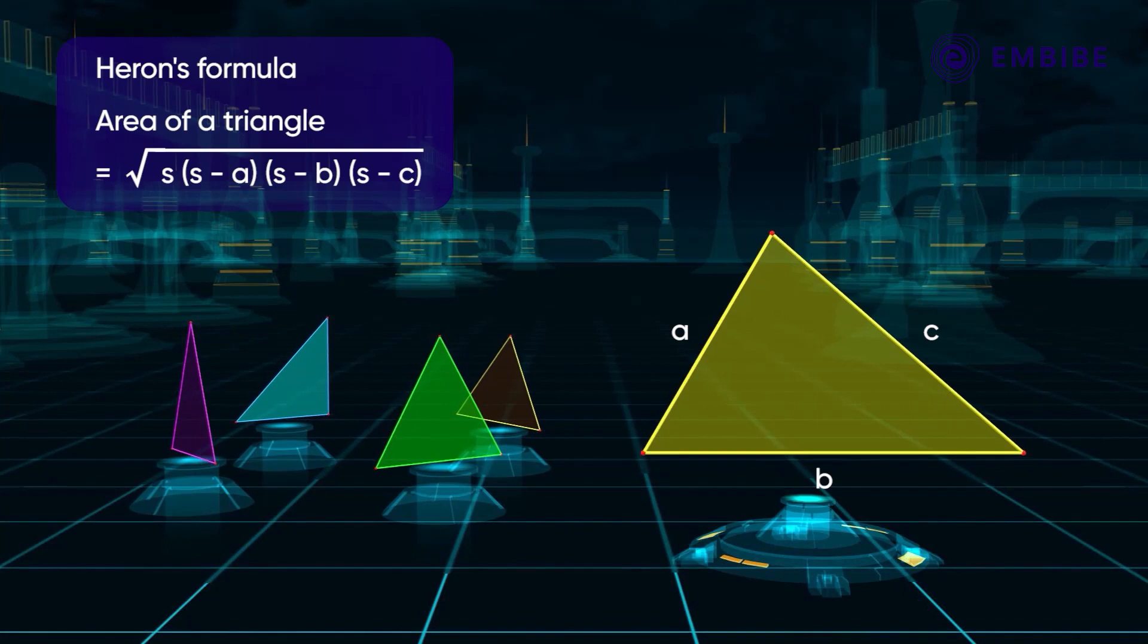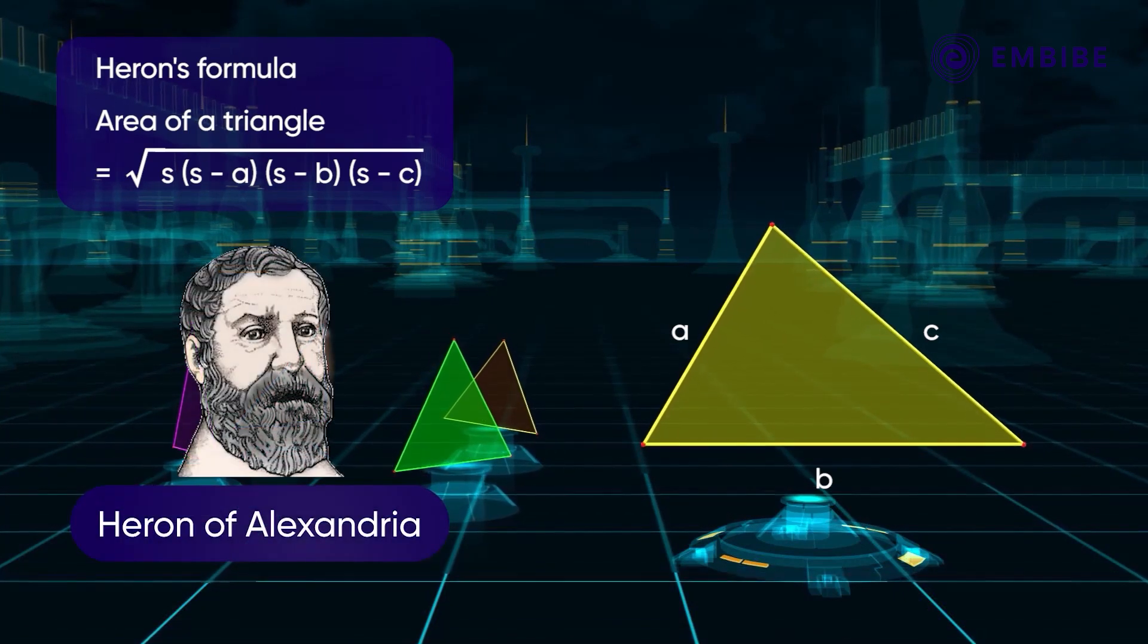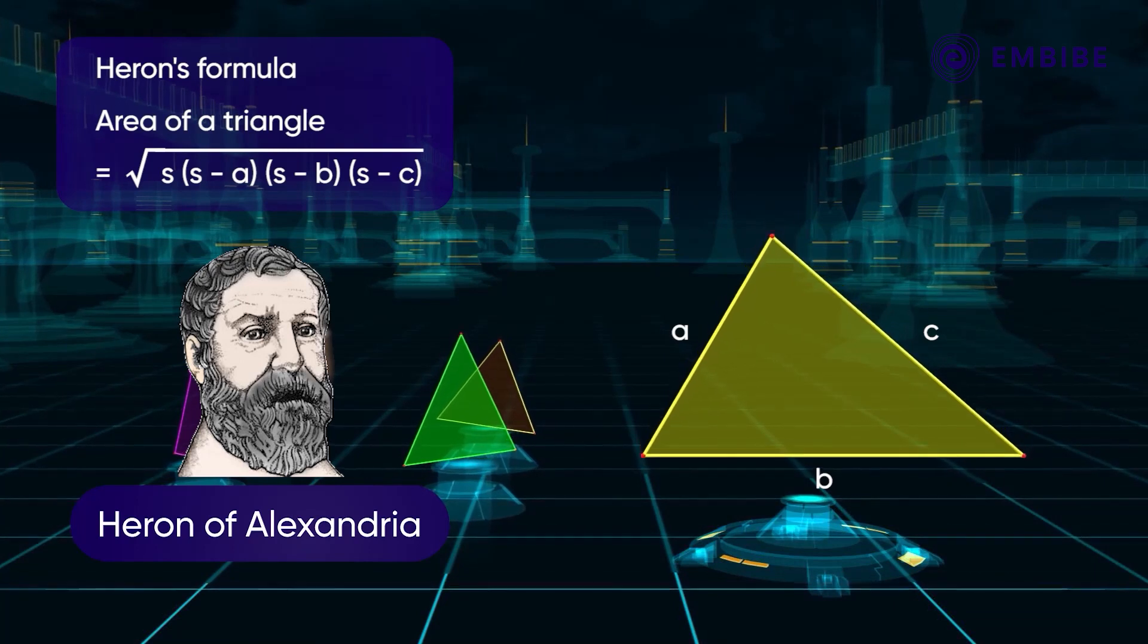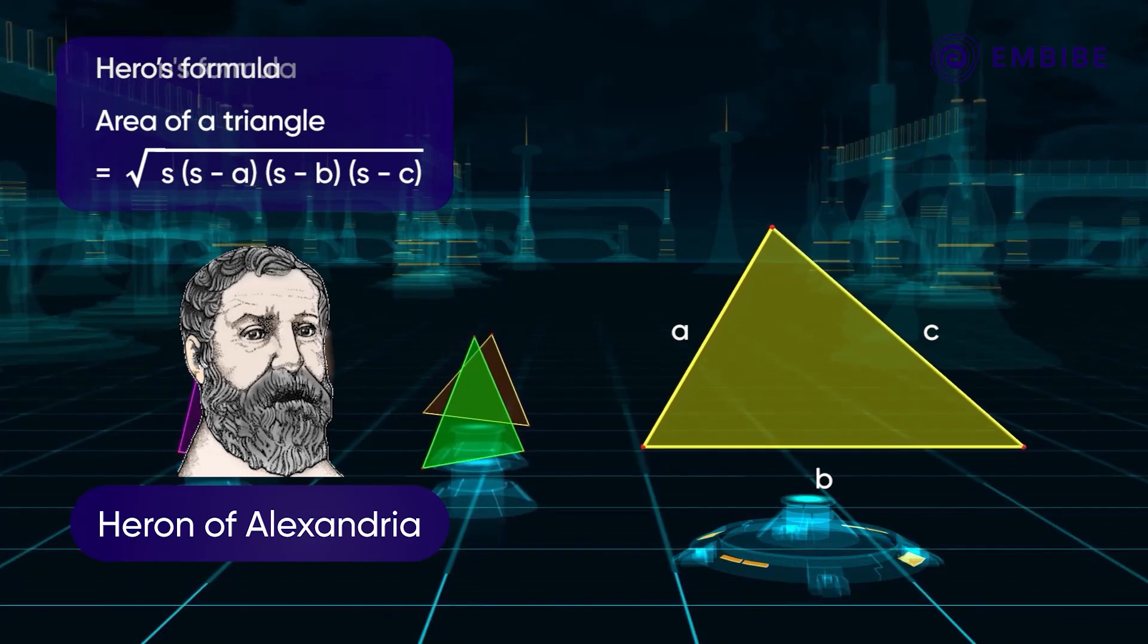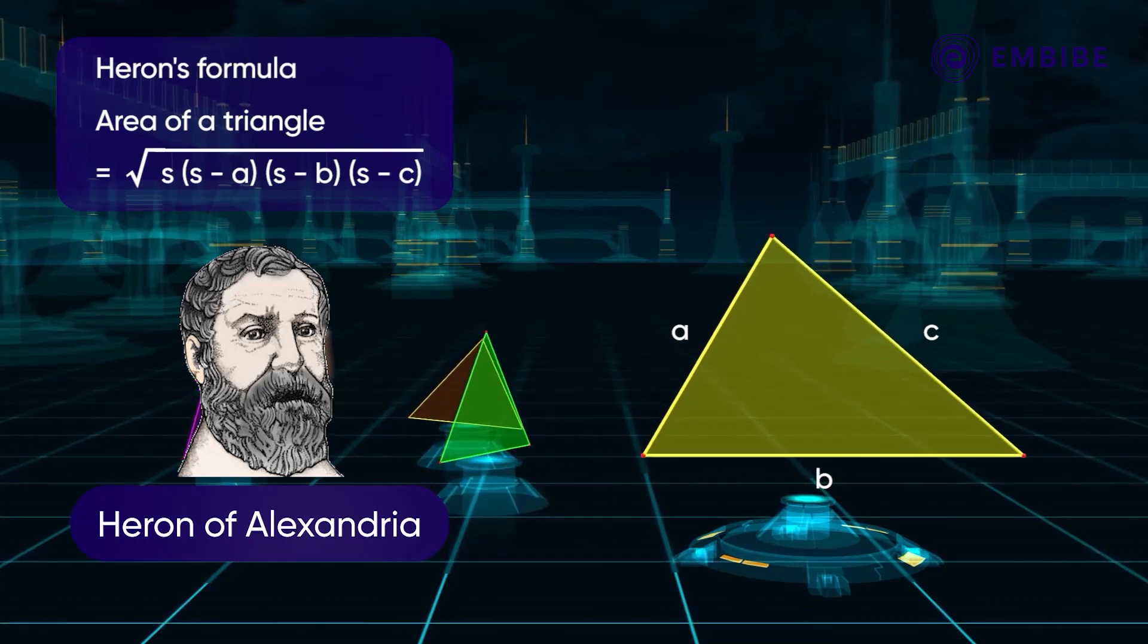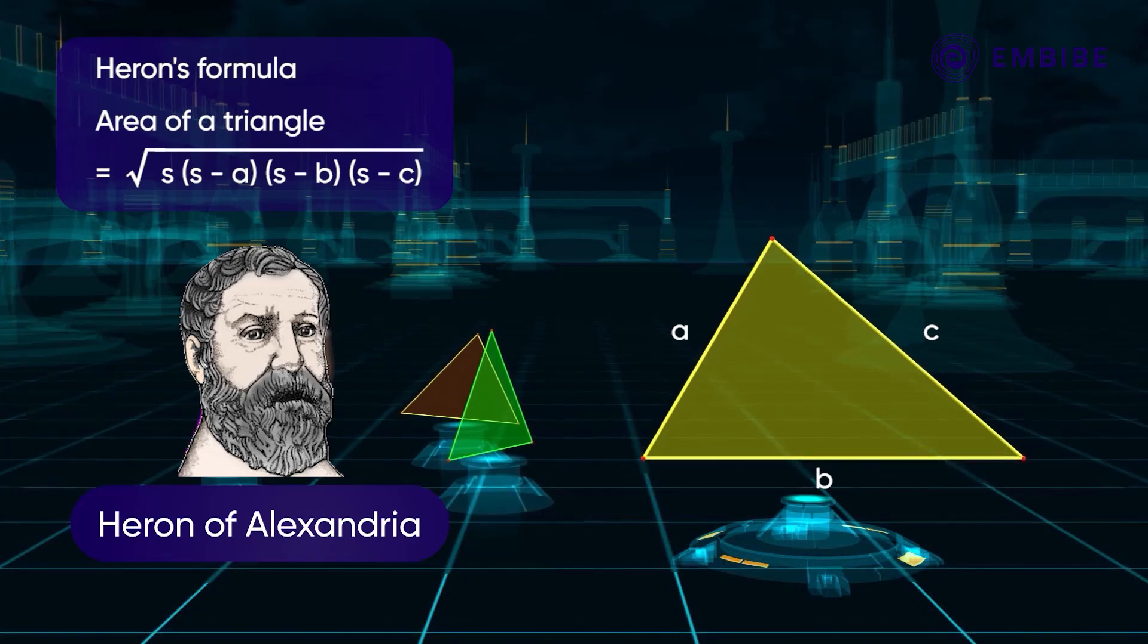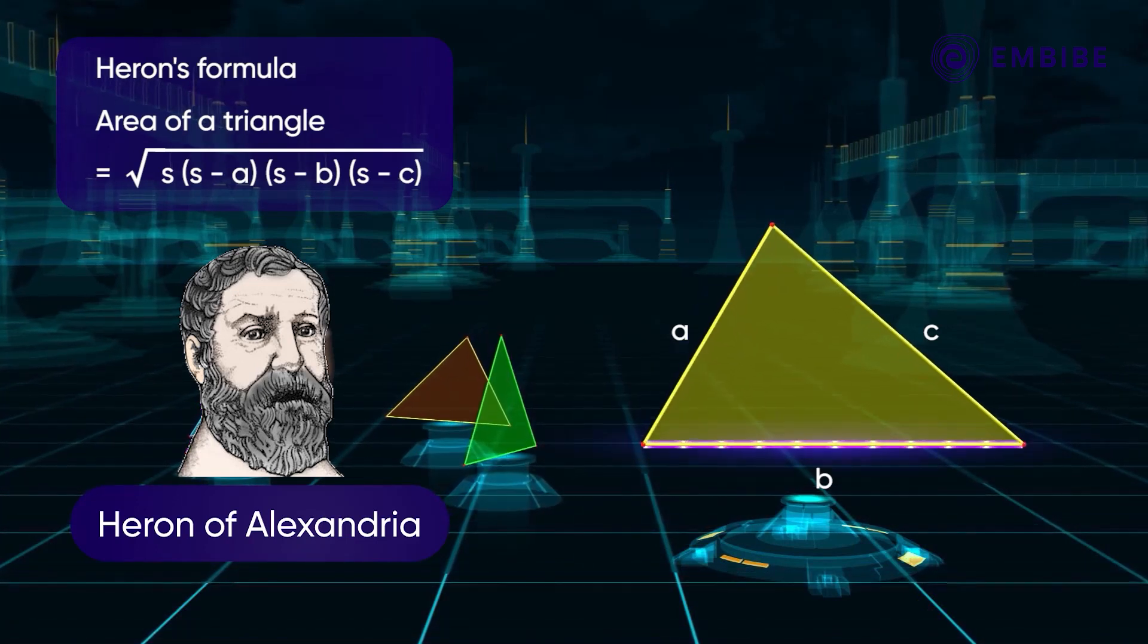In such cases, we use the formula known as Heron's formula, named after a Greek mathematician Heron of Alexandria. It is also known as Hero's formula. Heron of Alexandria had derived this famous formula for finding the area of a triangle using only the lengths of its three sides.